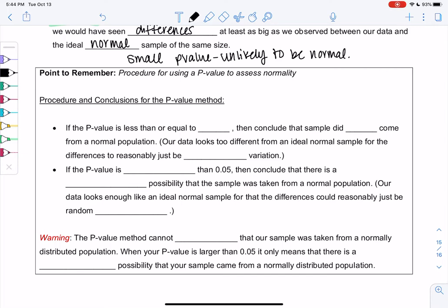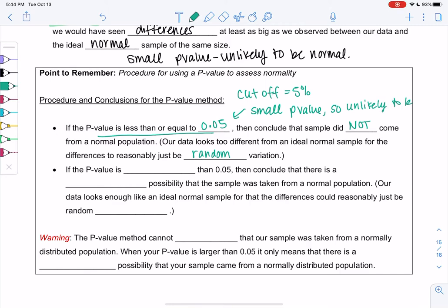Let's summarize this, the procedure for using p-value. This is actually the more structured version than just looking at a graph. We have a cutoff at 5%. If the p-value is less than or equal to 0.05, that's our cutoff. That is a small enough p-value to conclude that the sample did not come from a normal population. Our data is way too different from an ideal normal sample for differences to reasonably just be random variation. So small p-value, so unlikely to be normal. Small p-values are probably not normal.